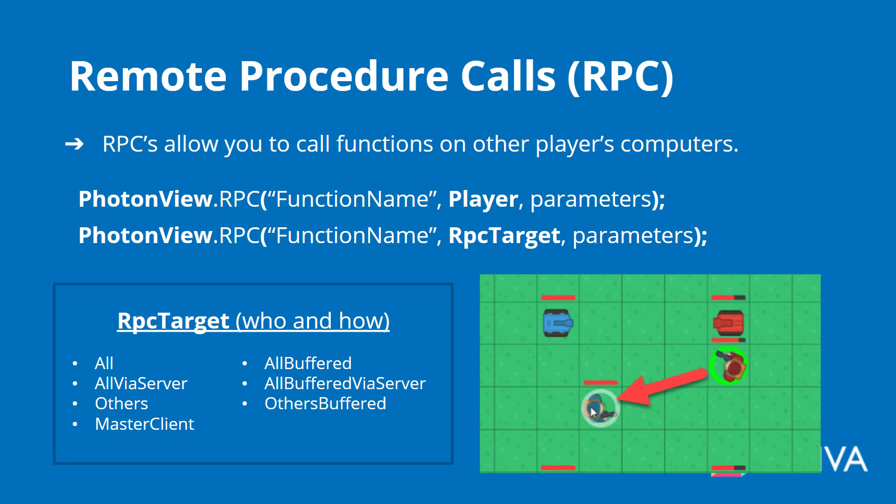RPCs allow you to call functions on other players' computers. Just like on your computer when typing code, you would go function name and then brackets — that is how you would call a function. But let's say you have an enemy and you want to damage them, and you want to call the Take Damage function on them. Normally you would just call their Take Damage function, but in order for that player to actually have that function called on their computer, you need to call an RPC.